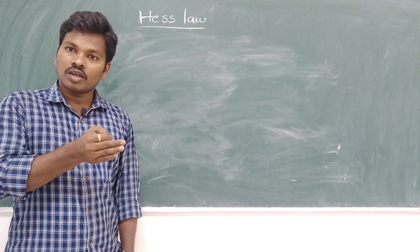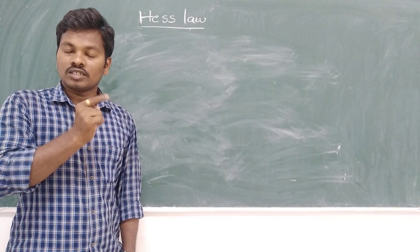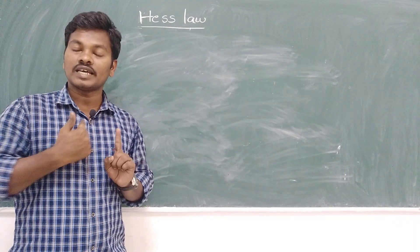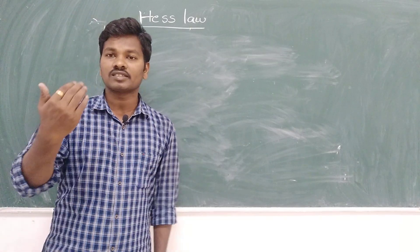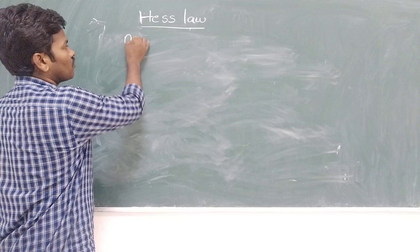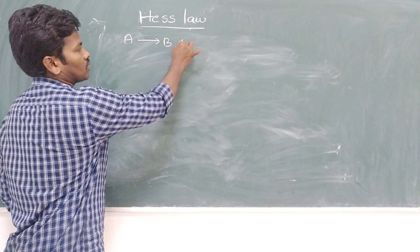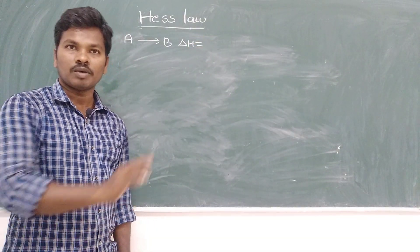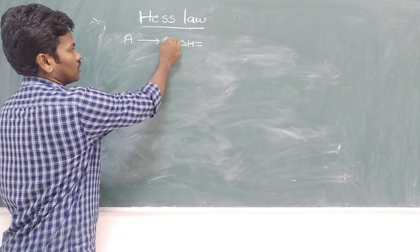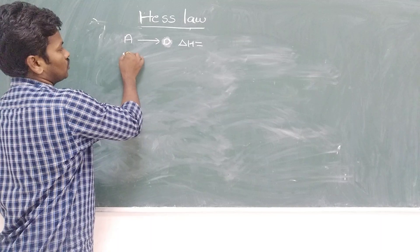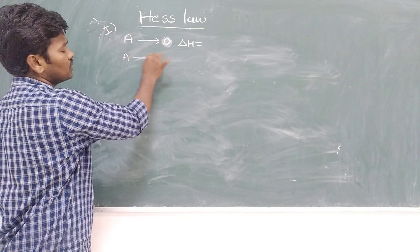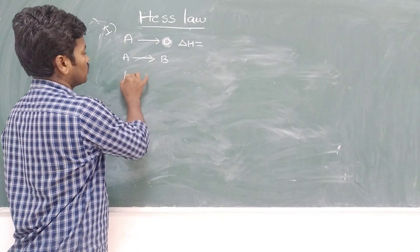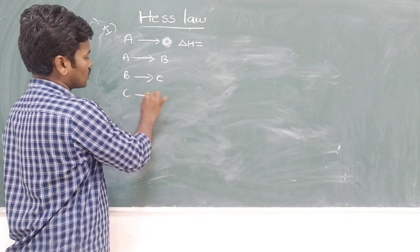Hess's Law deals with when a reactant is converted into a product by using two different methods. The first method is the direct method — only one step is involved: A is converted into D in a single step, and some enthalpy change occurs, whether exothermic or endothermic. The second method involves different steps: A is converted into B, B into C, and C into D.